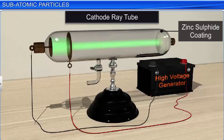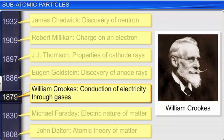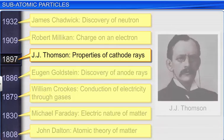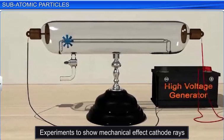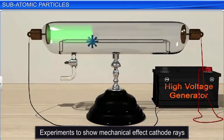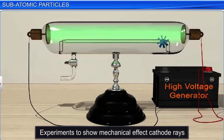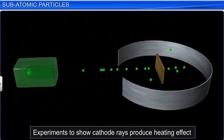Some other facts about cathode rays were discovered in 1897 by J.J. Thomson and other scientists through a series of experiments. In one experiment, Thomson observed that if a pinwheel is placed in the path of the cathode rays, the rays caused the pinwheel to rotate. This implied that cathode rays are made of material particles that produce a mechanical effect.